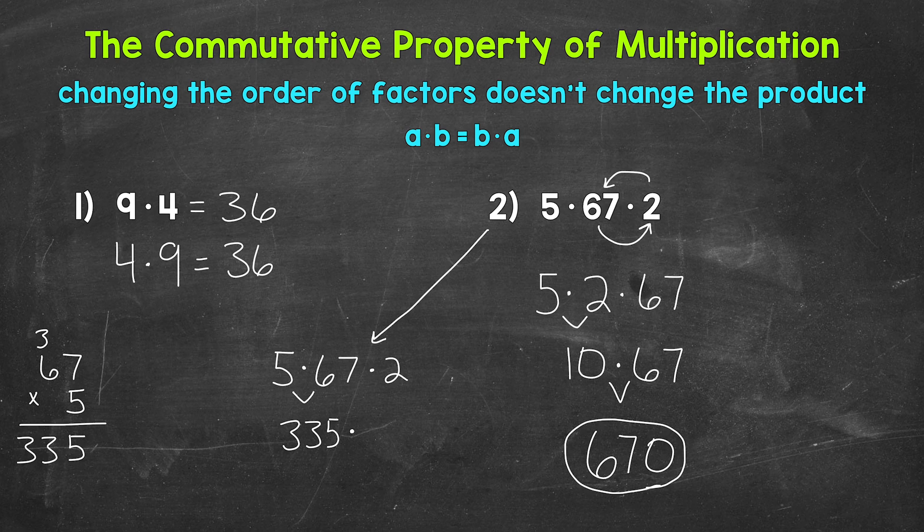Bring down the multiplication sign and the 2. We end with 335 times 2. So 335 times 2: 5 times 2 is 10. 2 times 3 is 6, plus 1 is 7. 2 times 3 equals 6. 335 times 2 equals 670.